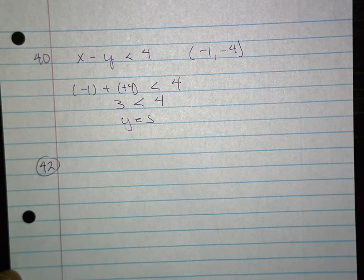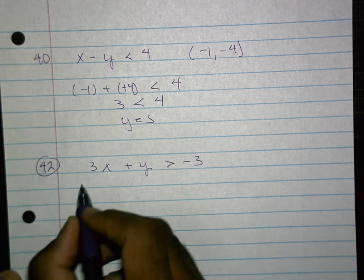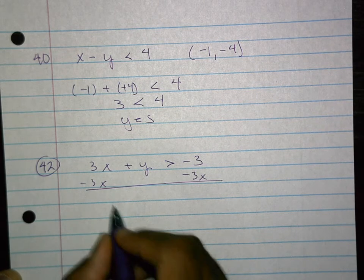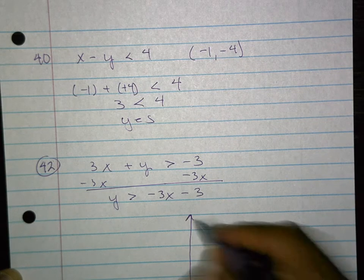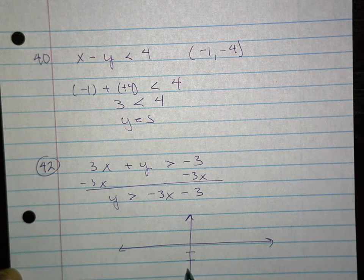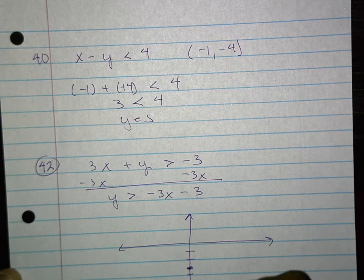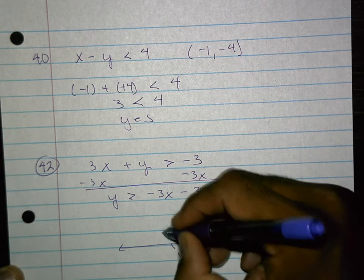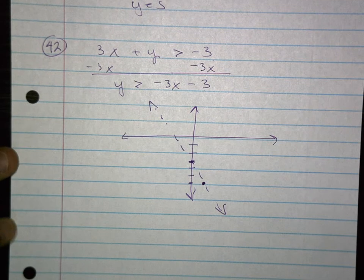42 wants us to graph and it gives us this inequality. I'm going to solve for y so I can use y equals mx plus b, or the inequality equivalent. So this has a y-intercept of 3 and it goes down 3, 1, 2, 3, over 1. There's no line on here, so this is a dashed line.